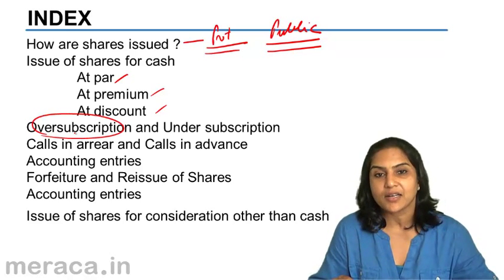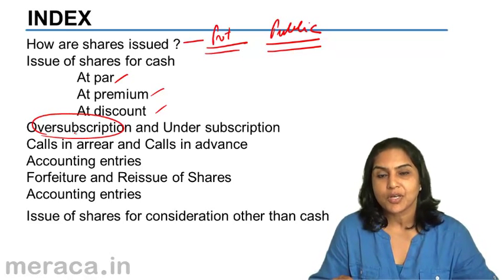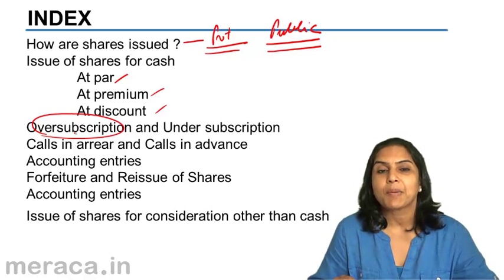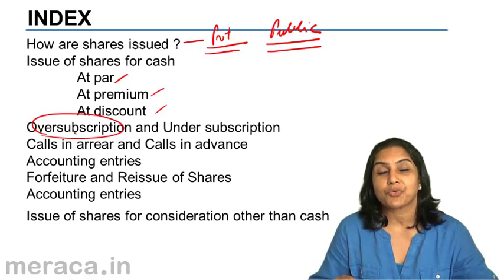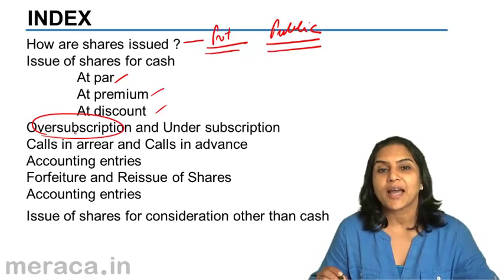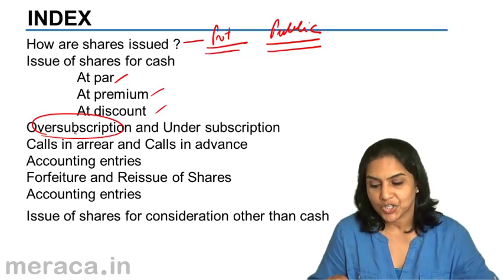Or, there is undersubscription — that is, not fully subscribed. Out of 10 lakh shares, people subscribe for only 8 lakh shares or only 9.5 lakh shares. That would be a case of undersubscription.